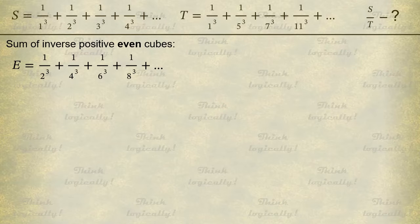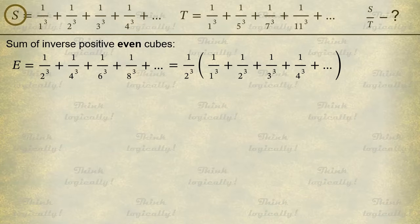So let's factor out 1 over 2 cubed. This leaves in the brackets the sum of inverse cubes of all positive integers, which is our S. While 2 cubed is of course 8. Thus, we find out that E equals 1 eighth times S.